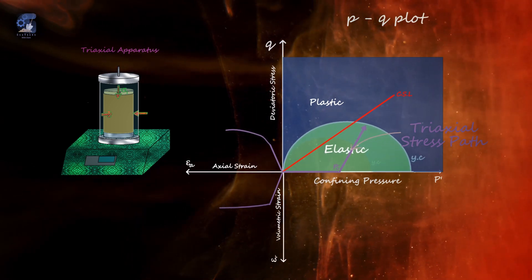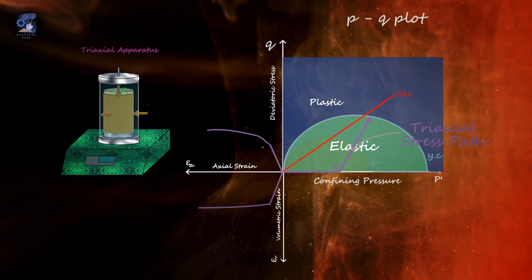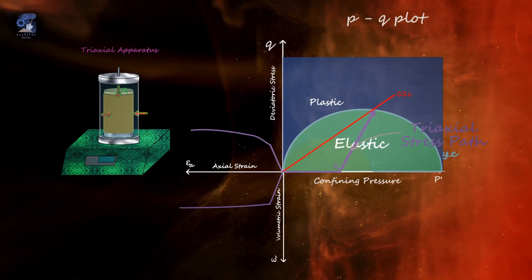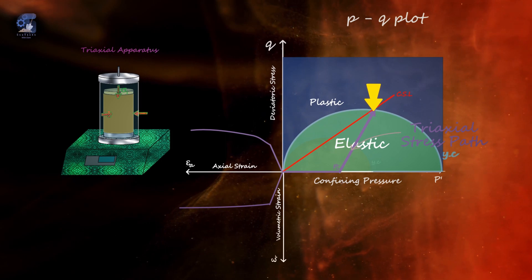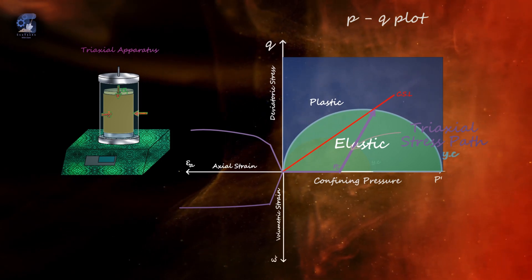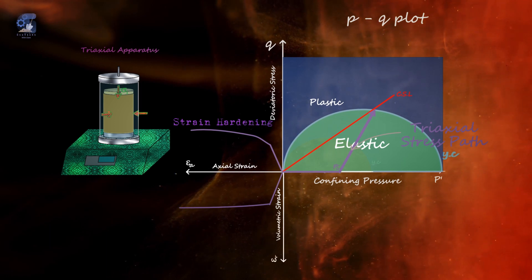Notice that the yield surface expands with the stress path until it reaches the critical state line, at which the sample is contracted and failed. This is called the strain hardening behavior of soil.